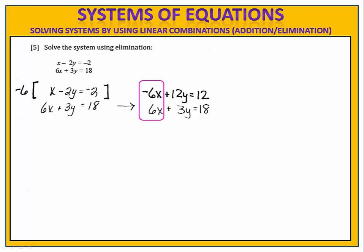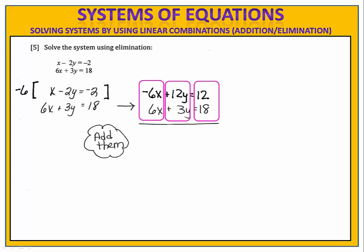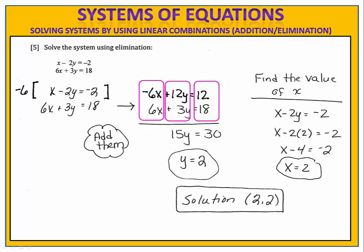The final step of this process involves adding the terms from the equations together. When I do that, I have negative 6x and positive 6x — there are no x's left. 12y plus 3y is 15y. 12 plus 18 is 30. Solve for y and I get y equals 2. That is the y value that makes both equations true simultaneously. Now we can find the x value by substituting 2 into one of the equations. When we calculate the numbers, we find that x also equals 2, and the solution is the point (2, 2). x equals 2 and y equals 2 are the only values that you can substitute into both equations and have them be true simultaneously.